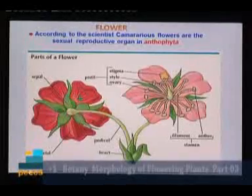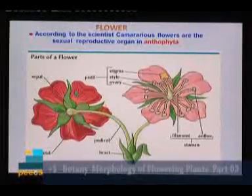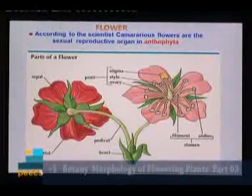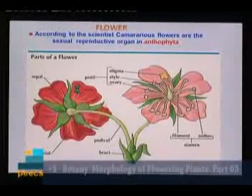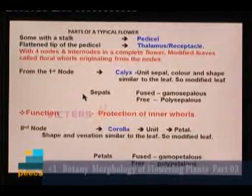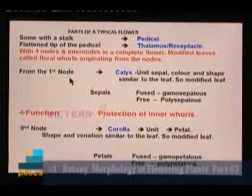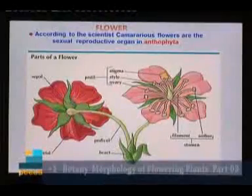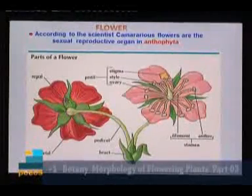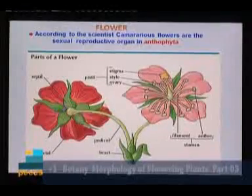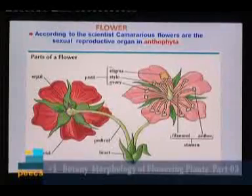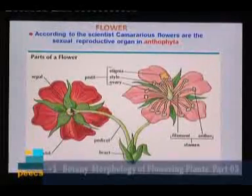The second whorl is the corolla, which is a modified leaf. It is brightly colored, so the function of the corolla is attraction of the pollinating agents. In some flowers, for example in hibiscus, the sepals are fused. In this flower you can see the sepals are free — separate units 1, 2, 3, 4, 5 units.